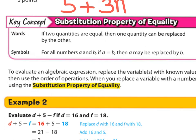As a key concept, let's copy this down. Substitution property of equality. If two quantities are equal, then one quantity can be replaced by the other. Symbols. For all numbers A and B, if A equals B, then A may be replaced by B. Because they equal the same. So they can be interchangeable.